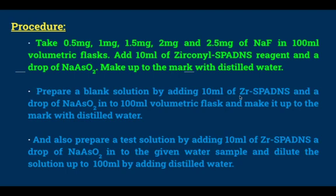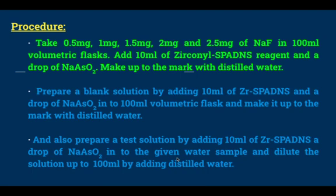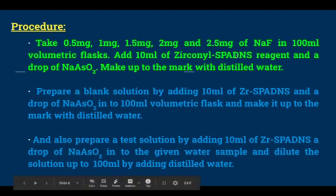A blank solution is prepared by adding 10 ml of zirconyl SPADNS reagent and a drop of sodium arsenite into a 100 ml volumetric flask and making it up to the mark with distilled water. The blank solution is always prepared without the analyte sample. For the test solution, the given test sample is transferred into a 100 ml volumetric flask, 10 ml of zirconyl SPADNS reagent and a drop of sodium arsenite are added, and the solution is diluted to 100 ml using distilled water and shaken well. So standard solutions, blank solution, and test solution are all prepared.